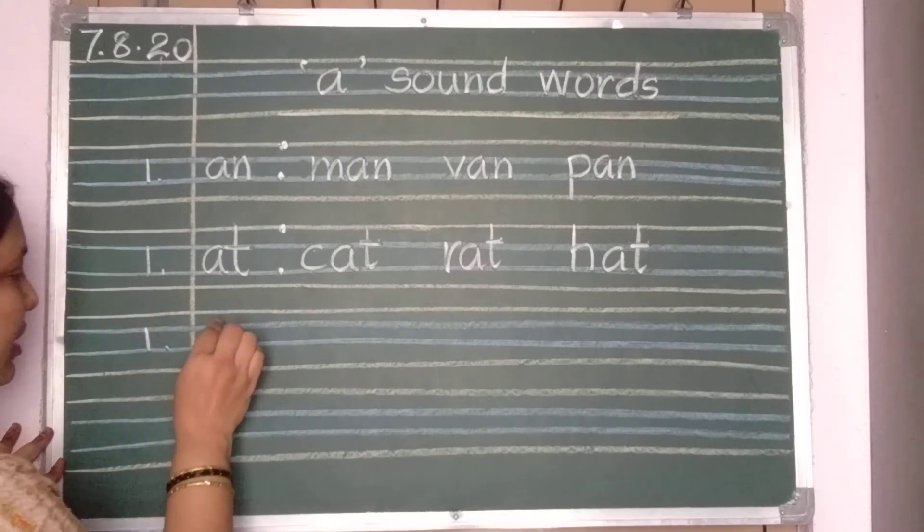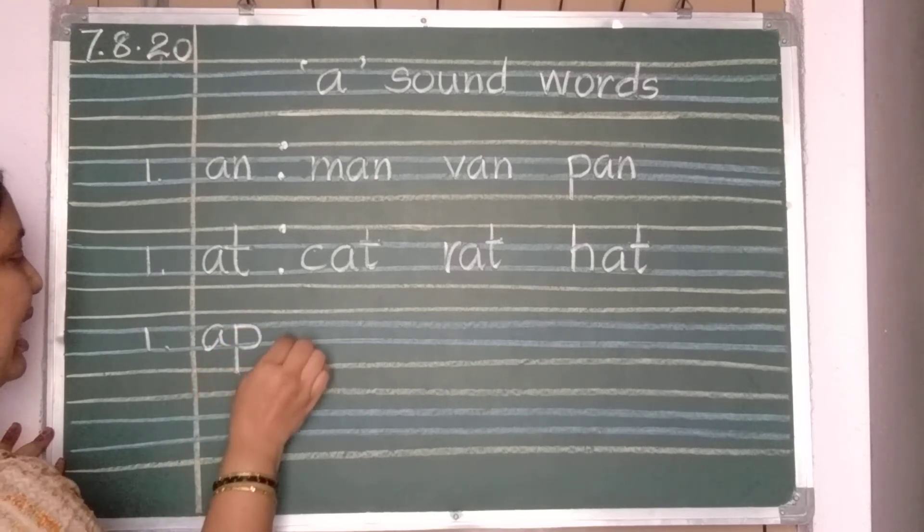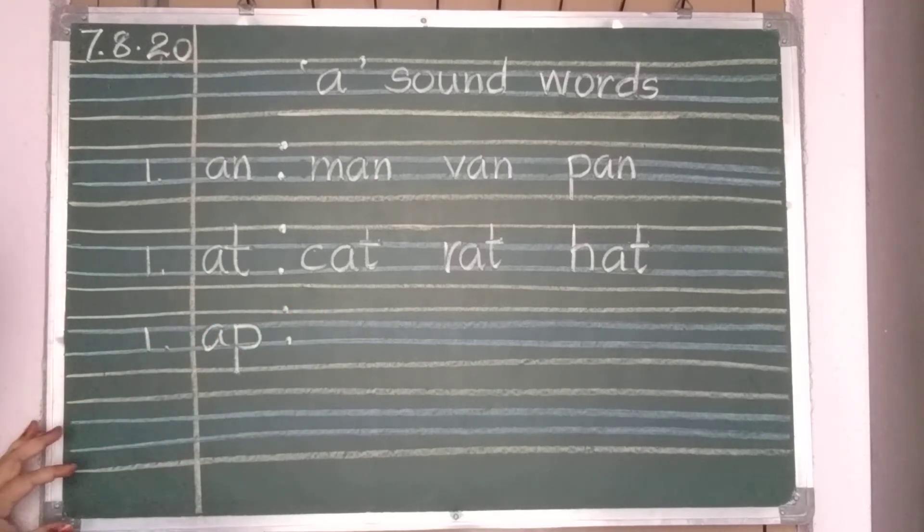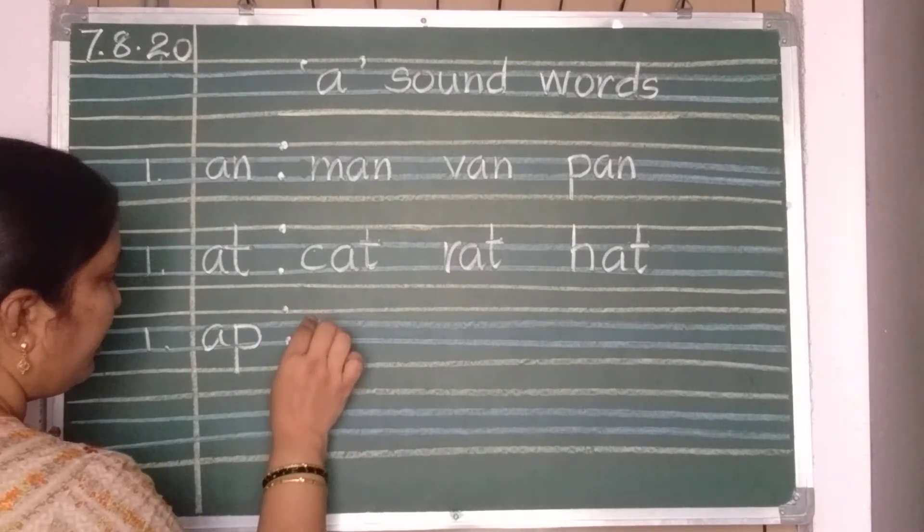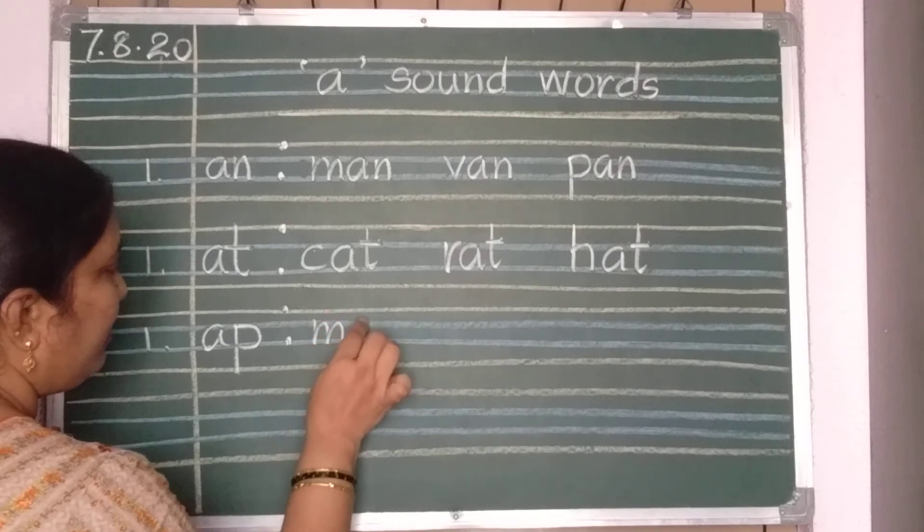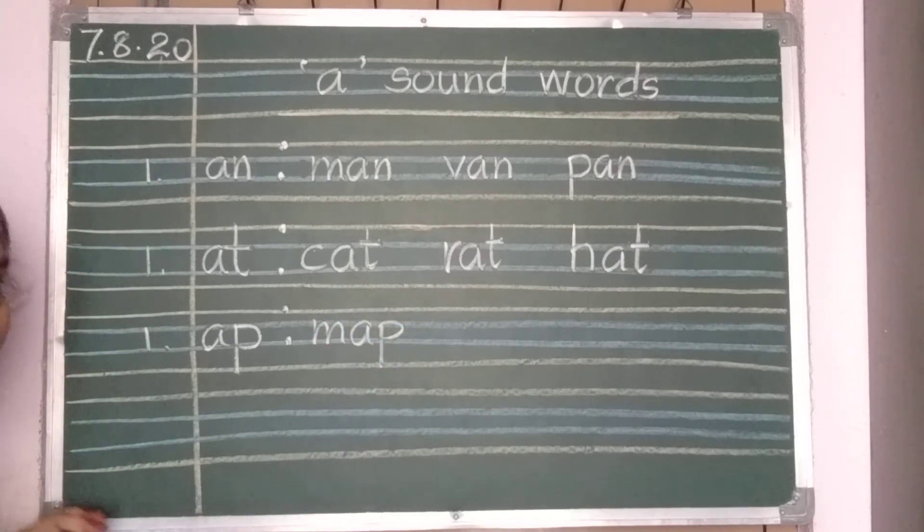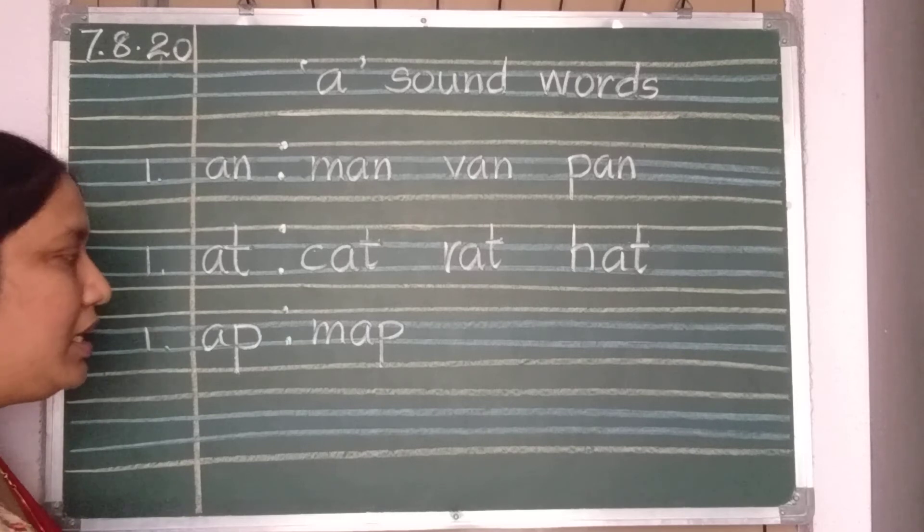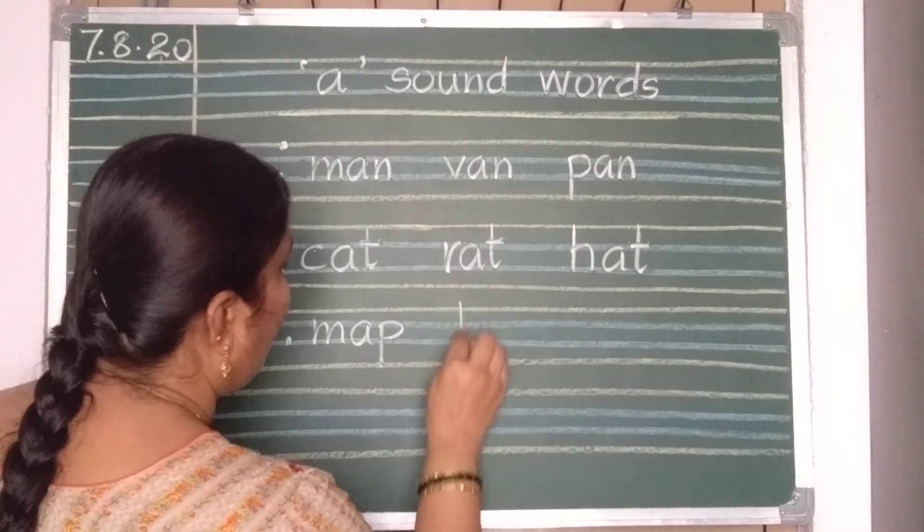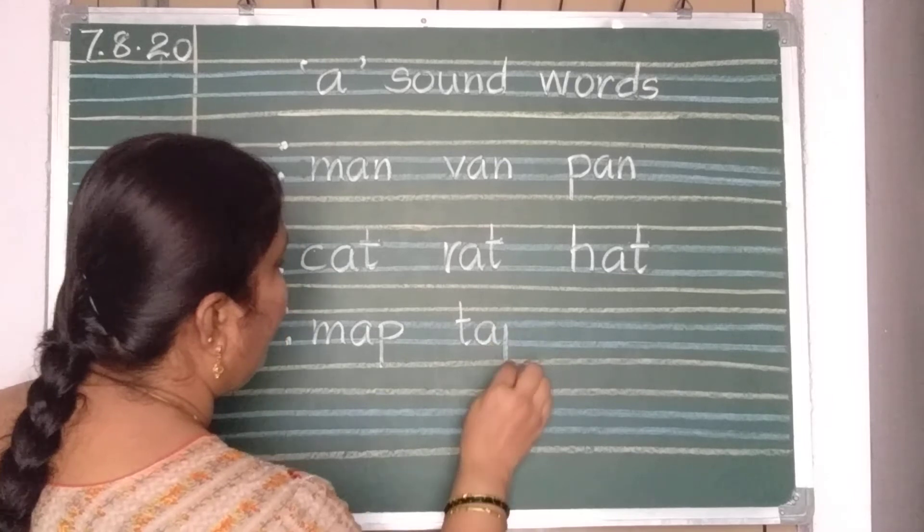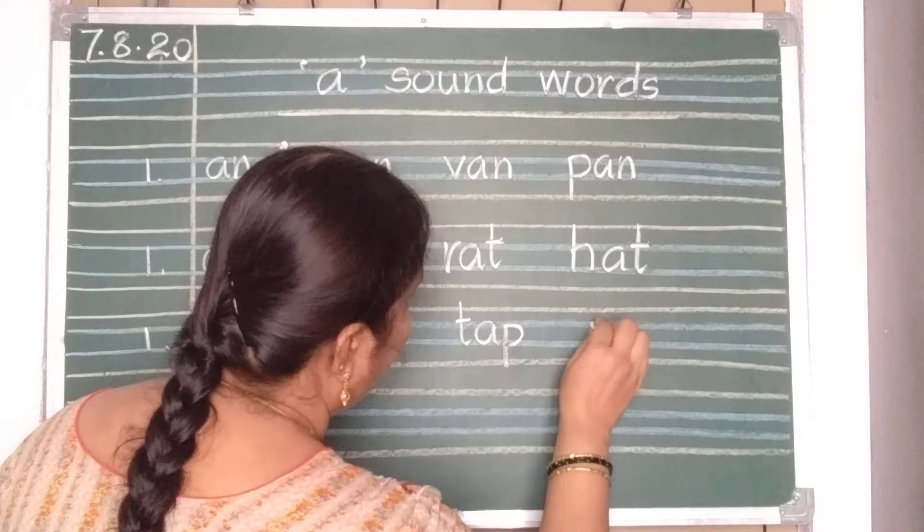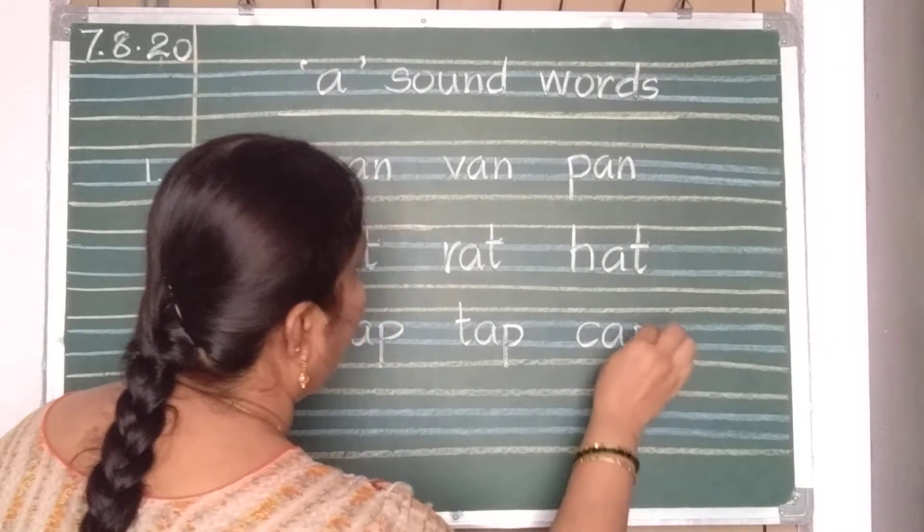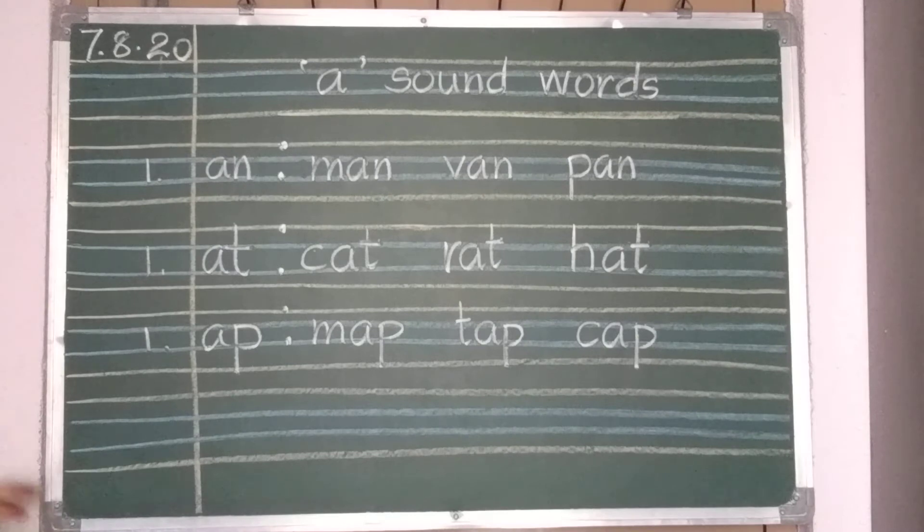And you should write. A, P, app. App words. After putting the dots, take one finger gap and write. M, A, P, map. Take two finger gap. T, A, P, tap. Two finger gap. C, A, P, cap. Now, these A, P words also three times you should repeat.